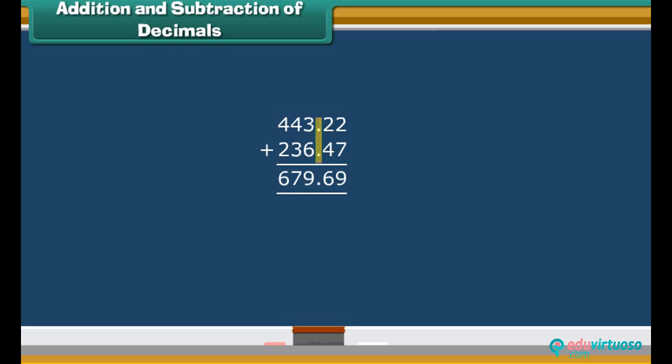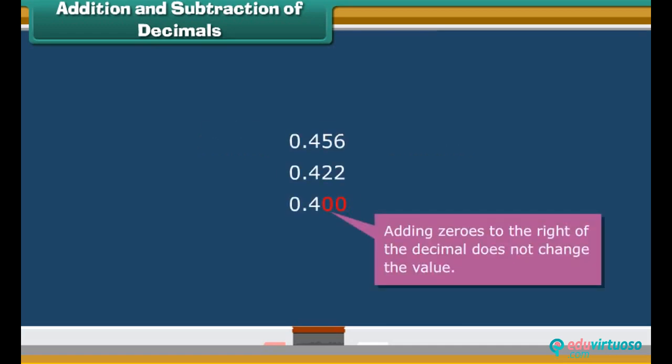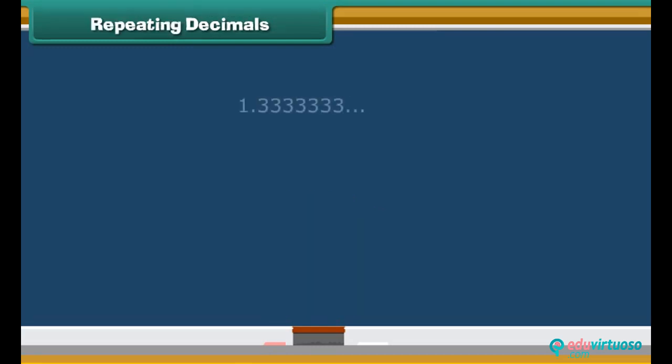Also, decimal numbers are easier to compare, just by adding zeros at the end of the shorter number to make the numbers of same length. And you can tell right away which number is bigger. Remember, adding zeros to the right of the decimal does not change the value.